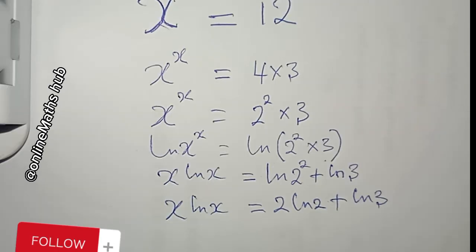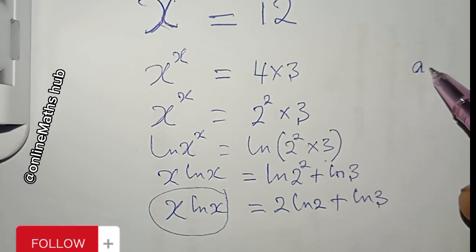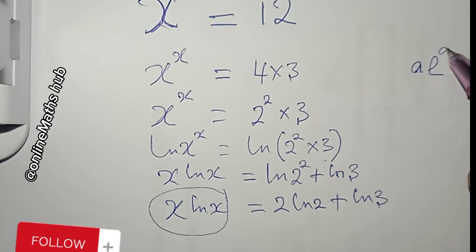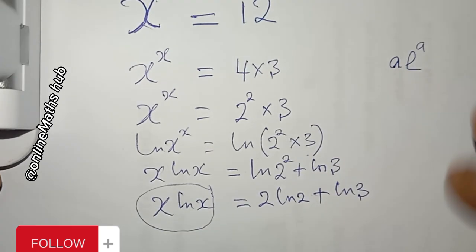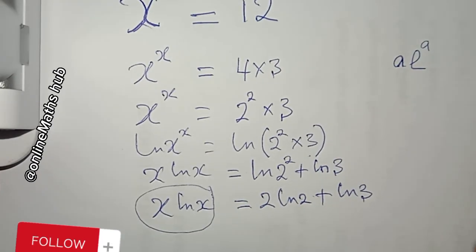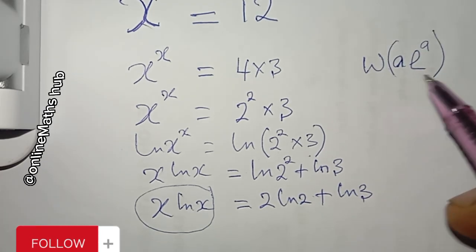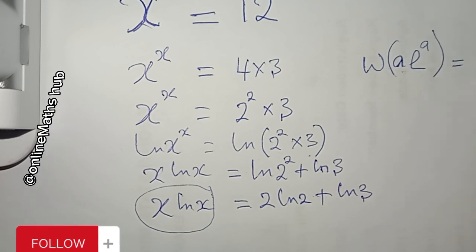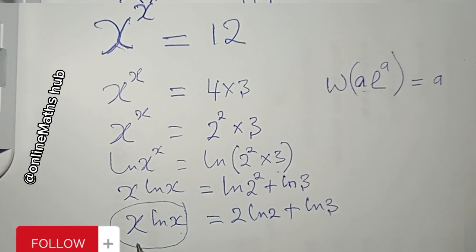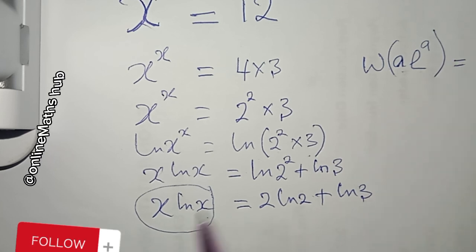Next, I want to apply the Lambert W function to both sides. Remember, the Lambert W function applies when you have the form a·e^a — passing W into that expression gives you back a. Before applying it here, I need to rearrange the left side into that form.